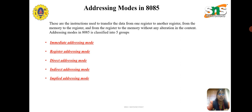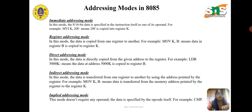There are five basic addressing mode groups. The first is immediate addressing mode. In immediate addressing mode, the source is always data. If the data is 8-bit, the instruction will be 2 bytes; if the data is 16-bit, the instruction will be 3 bytes. For example, MVI B, 20H means the value 20H is copied into register B.